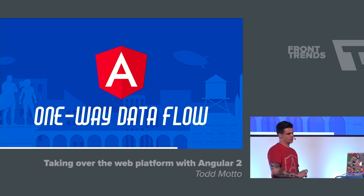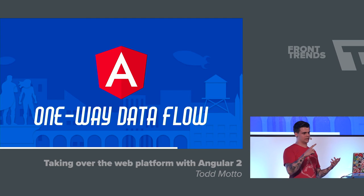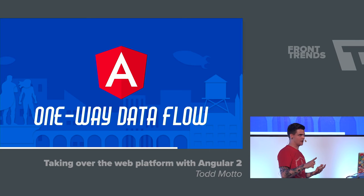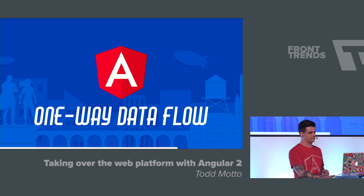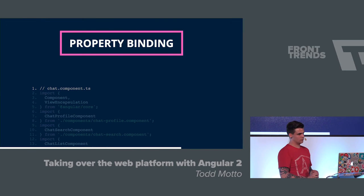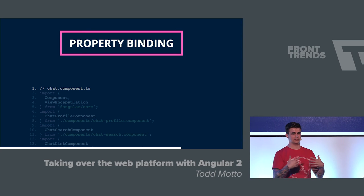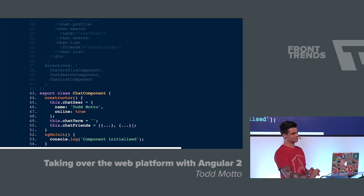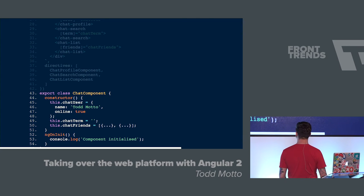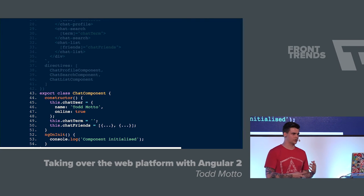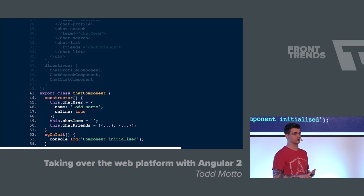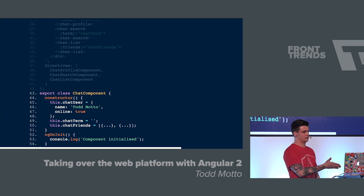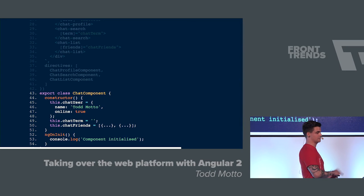We've set up our component architecture. We have the three child elements and a structure already. We then pass data from a particular service into a component. In the constructor, the data doesn't actually come from a back-end API in this example — you can inject HTTP, which is the HTTP module, similar to $http in Angular 1. I've just hard-coded this data; it could be from an API response. So we've got chat user, chat term, and chat friends as properties.